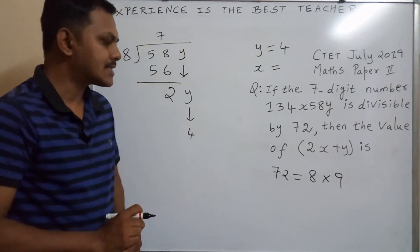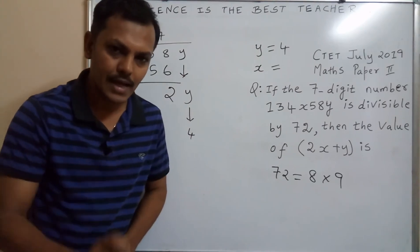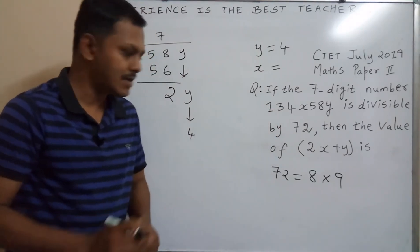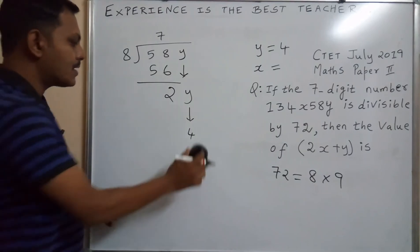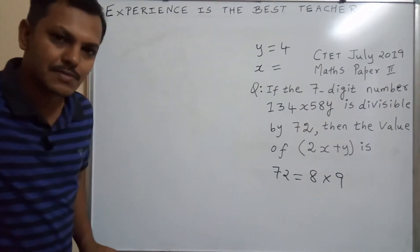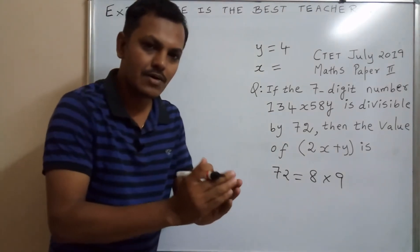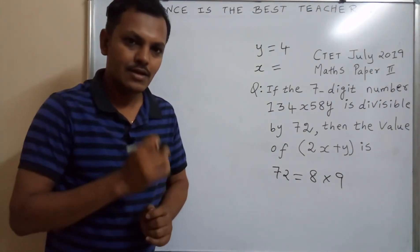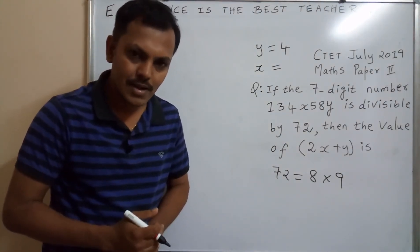To find out the x value, we use the divisibility rule for number 9 for this particular 7-digit number. The same number, how to find out that this number is divisible by 9 or not, you know the divisibility rule for number 9. Sum of the digits is divisible by 9, then the particular number is divisible by 9.